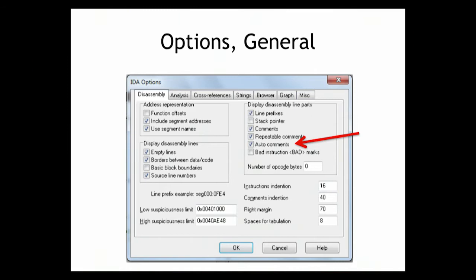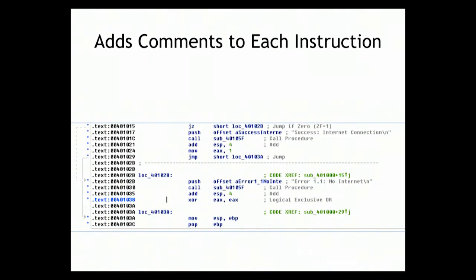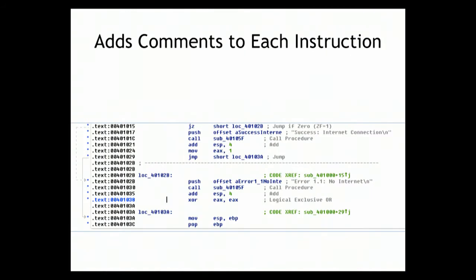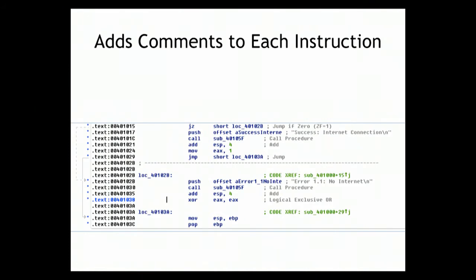The auto-comments are on by default and can be turned off if you don't like them, but typically they help quite a bit. There's also a setting that puts a comment on every single instruction — things like 'call procedure' — but I think that just gets in the way. The default setting is better; it only puts information there when it's not obvious.